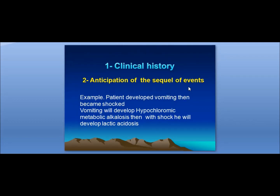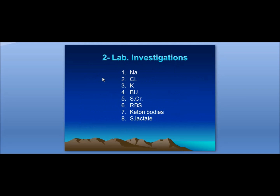Anticipating the sequence of events: if a patient develops vomiting and then becomes shocked, the vomiting will produce hypochloremic metabolic alkalosis, while the shock will subsequently develop high anion gap metabolic acidosis. For investigations, you should study sodium, chloride, potassium, urea, serum creatinine, random blood sugar, ketone bodies, and serum lactate, then come to the ABG chart to study it.